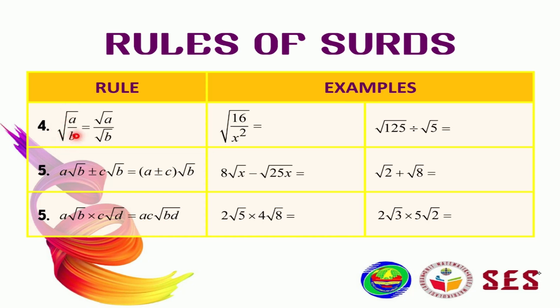Next, rule number 4. Because this is in division, we can separate the square root to become square root of A divided by square root of B. For example, square root of 16 divided by x squared — because they are in division, it can be separated into square root of 16 divided by square root of x squared. This simplifies to 4 over x. I'll leave the second example here for you to do.